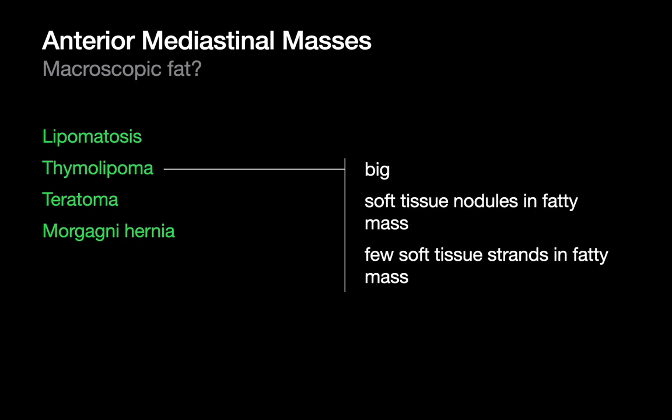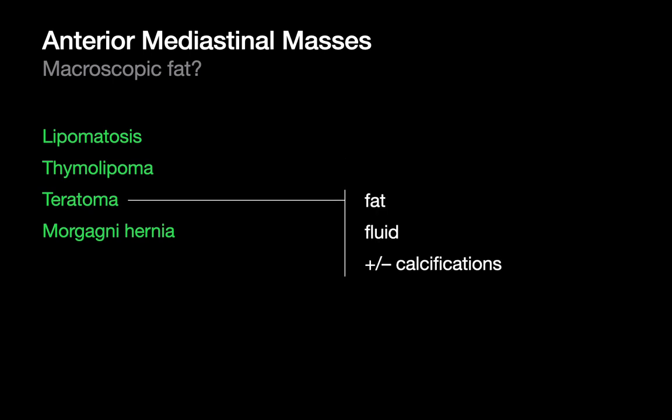Thymolipomas look very different from lipomatosis — uncommon, slow-growing, benign tumors that are usually huge when finally identified, with a very special look that's really different from everything else on this list. These fatty tumors contain some sort of soft tissue component, sometimes in the form of nodules, other times in the form of strands. Then there are teratomas, which often contain fat, sometimes fluid, sometimes calcifications too, but not always.